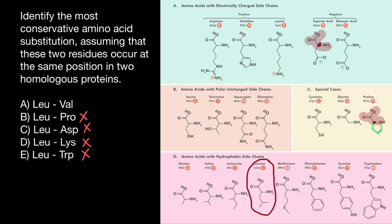Now let's check leucine and valine. Here's our leucine and here's valine. As you see, they are in the same category, which is good. The R groups are very similar in their properties and in the size of the R group. So this is going to be our choice.